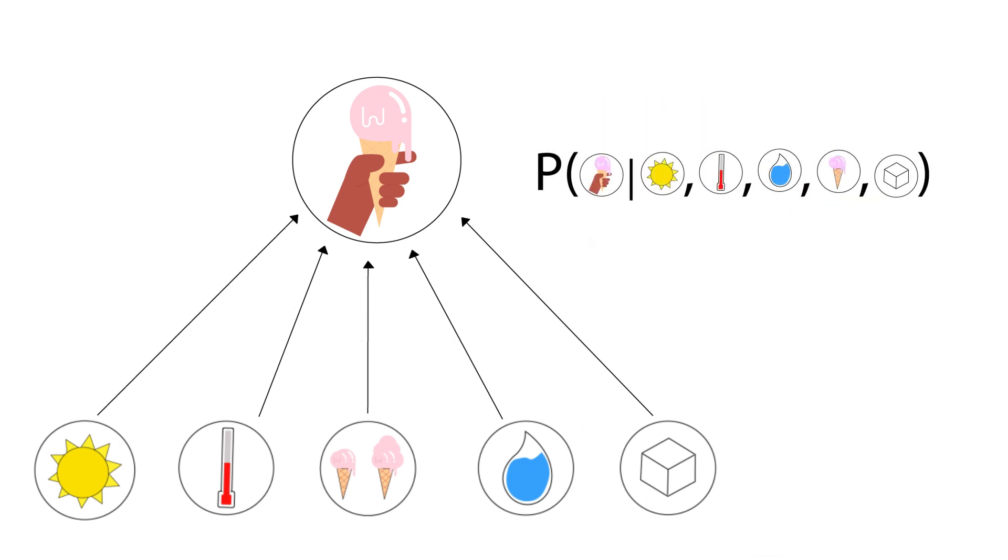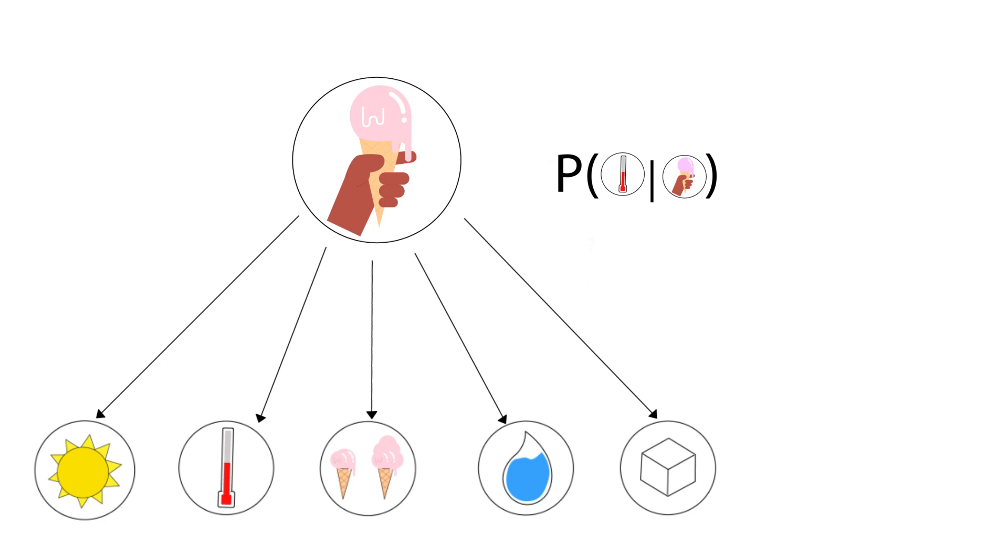But we can also just reverse our viewpoint and consider the probability that, for example, it is high temperature given that the ice cream melts.